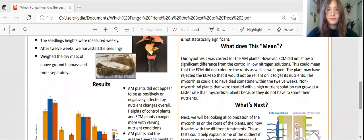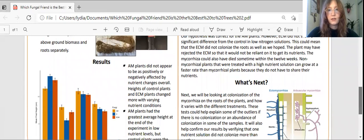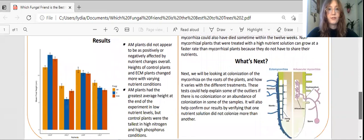We also saw that the non-mycorrhizal plants that were treated with high nutrient solution could grow at a faster rate because they didn't have to share their sugar with the mycorrhiza.